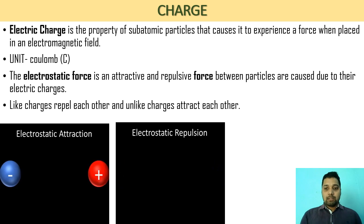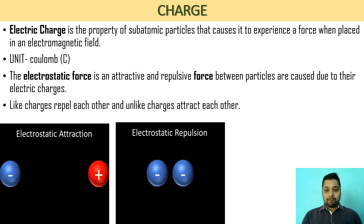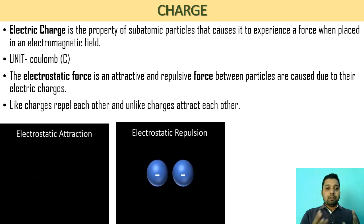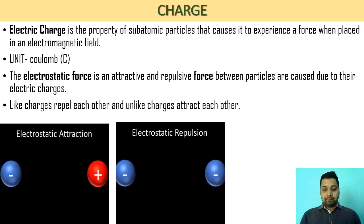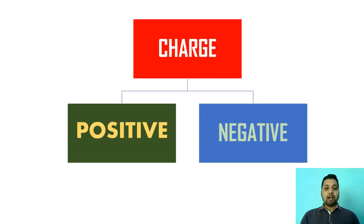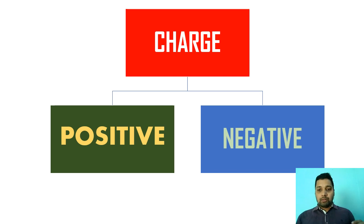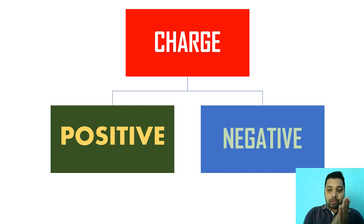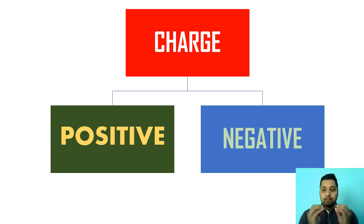Like charges repel each other and unlike charges attract each other. If both charges are the same, they repel; when both are different, they attract. There are two types of charge. Whenever you take a neutral atom or neutral substance, it has both positive and negative charges in equal numbers. But when there is an imbalance of charge, it leads to electricity. In types of charge, there are two types — one is positive charge and one is negative charge. An element that loses electrons gets a positive charge; one that gains electrons gets a negative charge.